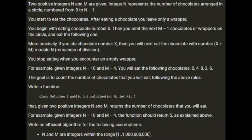You stop eating when you encounter an empty wrapper. For example, given n equals 10 and m equals 4, you will eat chocolates 0, 4, 8, 2, 6. The goal is to count the number of chocolates you will eat. Given n is 10 and m is 4, the function should return 5.